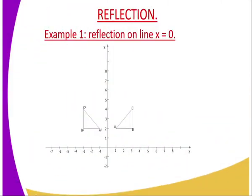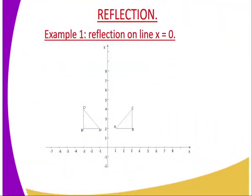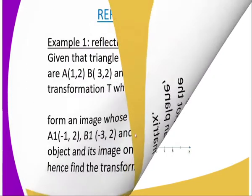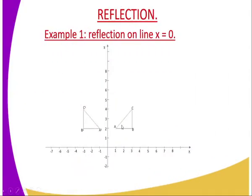On this diagram, I have done the first procedure of representing the object and the image on a Cartesian plane. We have triangle ABC as our object. The coordinate of A is 1 and 2 — you can confirm it is well represented at 1 and 2. The coordinate of B is 3 and 2, and the coordinate of C is 3 and 4, as you can confirm on the Cartesian plane.